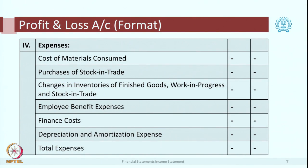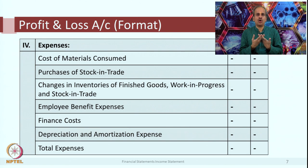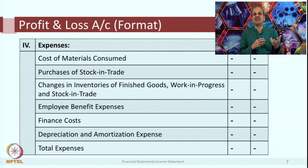Both together form the total revenue for that entity. Item number 4 is expenses — all expenses of the concern in that particular year are listed out. The Companies Act has specified certain headings, just like in the balance sheet. The first item is cost of material consumed. If you are a manufacturing entity, you would purchase raw material, components, and spare parts — the cost of all these items is considered as material consumed. If it is in stock, you will not take it here; what is actually consumed in the period is shown as cost of material consumed.